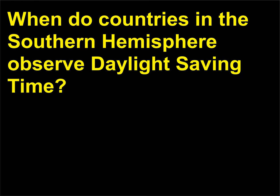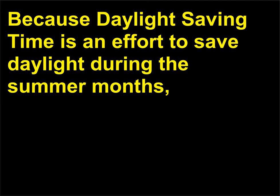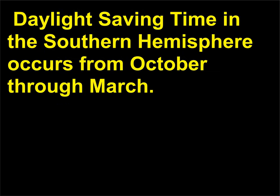When do countries in the southern hemisphere observe daylight saving time? Because daylight saving time is an effort to save daylight during the summer months, daylight saving time in the southern hemisphere occurs from October through March.